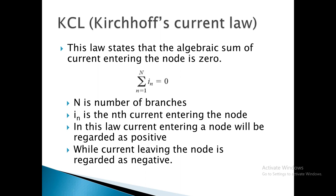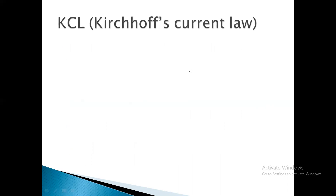So we have 3 branches and therefore 3 currents: I1, I2, I3. We add them all together and set the sum equal to zero — this is the KCL statement. For example, consider a node where 5 branches are connected.